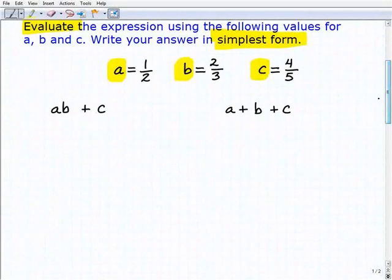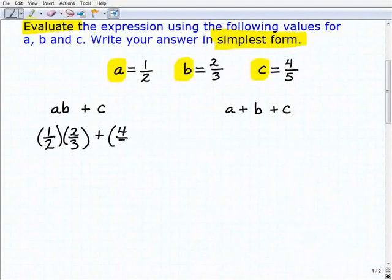So let's go ahead and get started here. We'll take this first one, AB plus C. So remember, AB means A times B. So we're going to plug in our values, and when you're doing that, you always want to use parentheses to enter in the values assigned. So A is equal to one-half, so notice here I'm putting one-half around parentheses, or putting parentheses around one-half. So we're going to multiply that by B, that's two-thirds, and then we're going to add that to C, which is four-fifths.